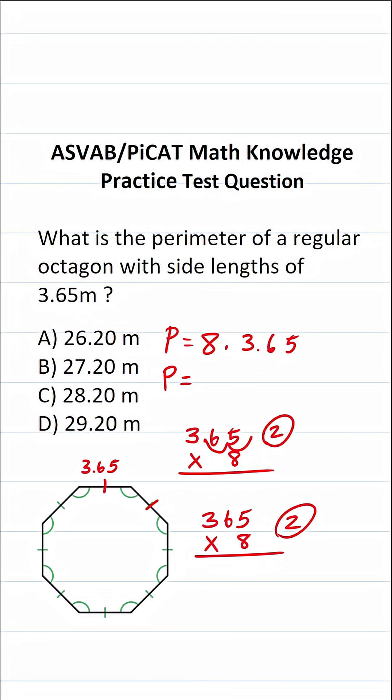5 times 8 is going to be 40, so bring down the zero, carry up 4. 6 times 8 is going to be 48, 49, 50, 51, 52, carry up 5. 8 times 3 is 24, 25, 26, 27, 28, 29.